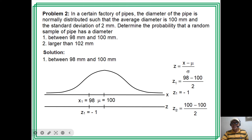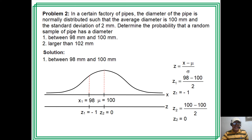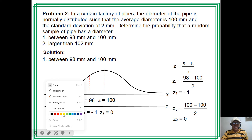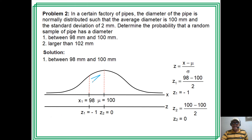For the range 98 to 100: x = 100 corresponds to the mean, so z = 0. We seek the probability between z = −1 and z = 0. To find this using the calculator, set mode to STAT. The P(z) function gives the area to the left of the given z-value.